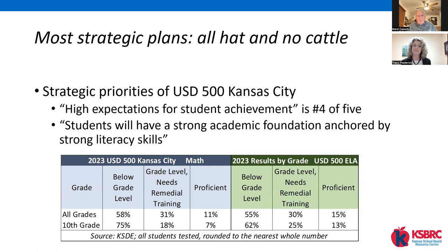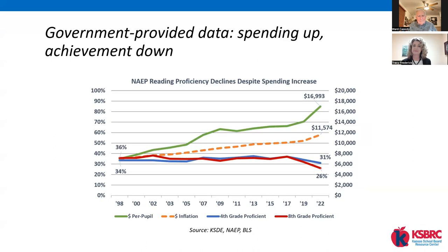Every school district should look at their expectations and how they've written them. They're often nice words but not really high expectations. You have to have high expectations, and if you don't measure exactly what you want to get done, you don't get anything done. Everyone says it's all about money, but looking at so many districts in the last year and a half, it's not all about money — it's how you spend the money. NAEP scores are a statistic you can measure against everybody else.